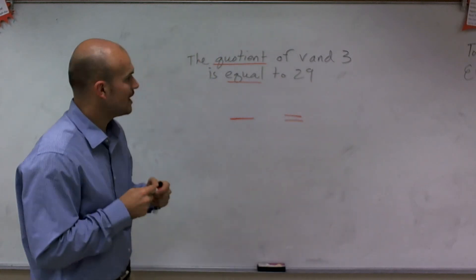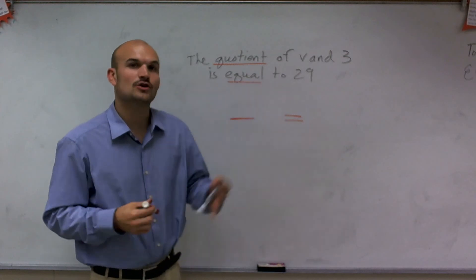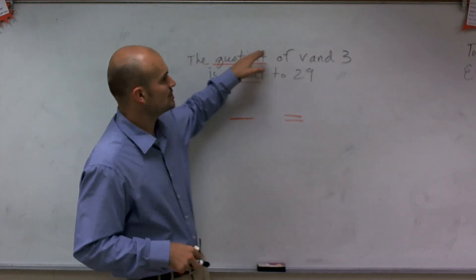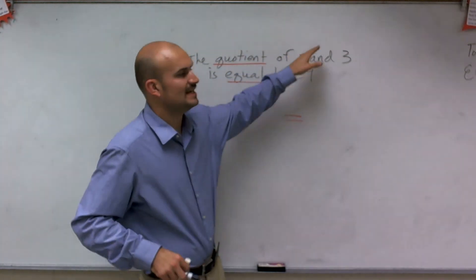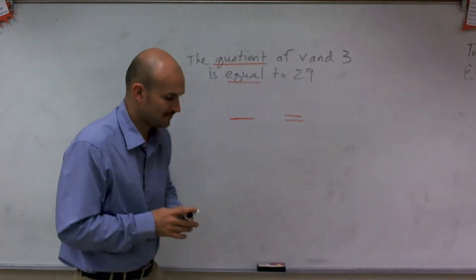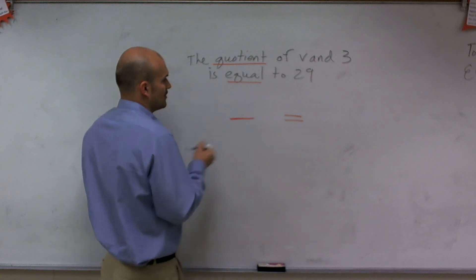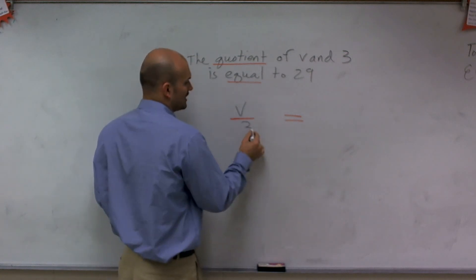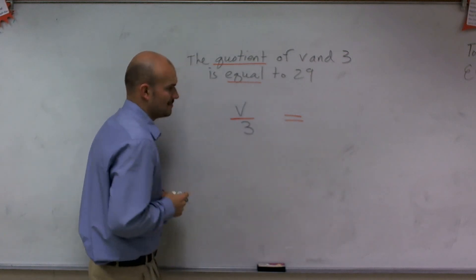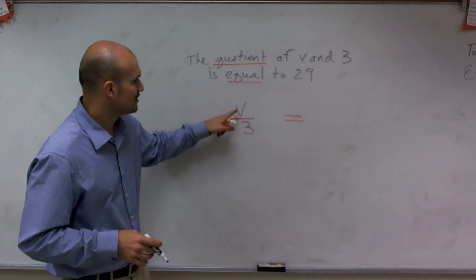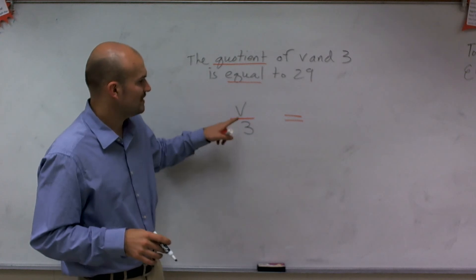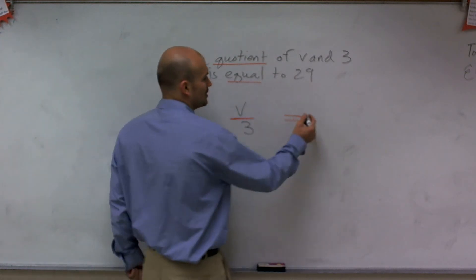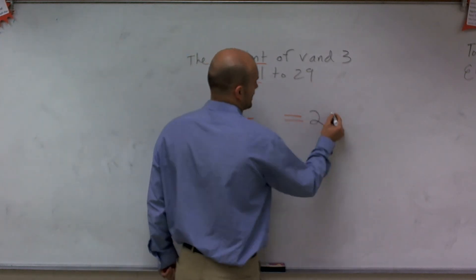So I look at my quotient and I say, what am I taking the quotient of? It says the quotient of V and 3. So what I'm going to write is V as the numerator and 3 as the denominator. So the quotient of V and 3 is equal to the number 29.